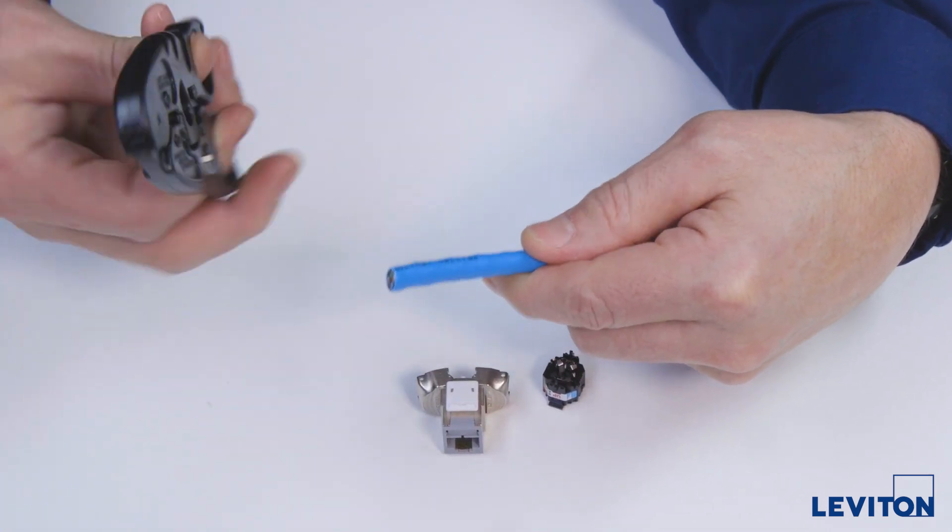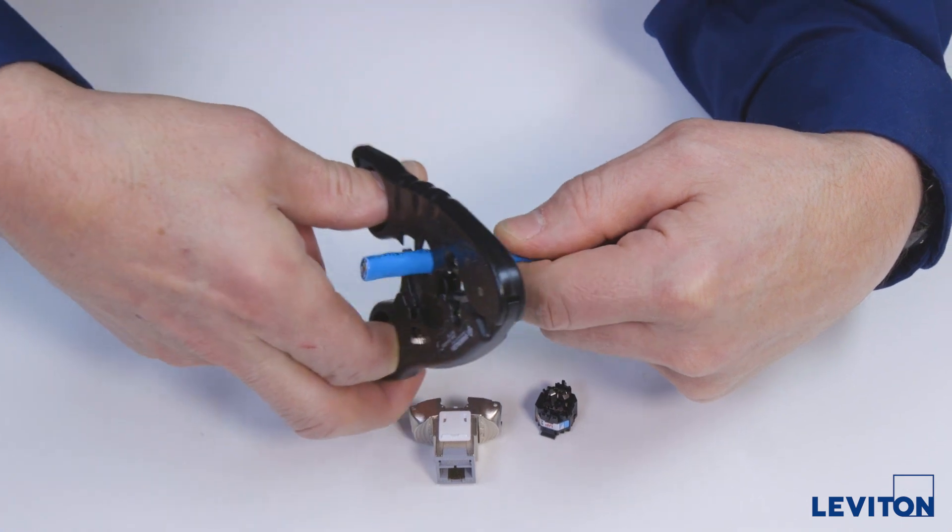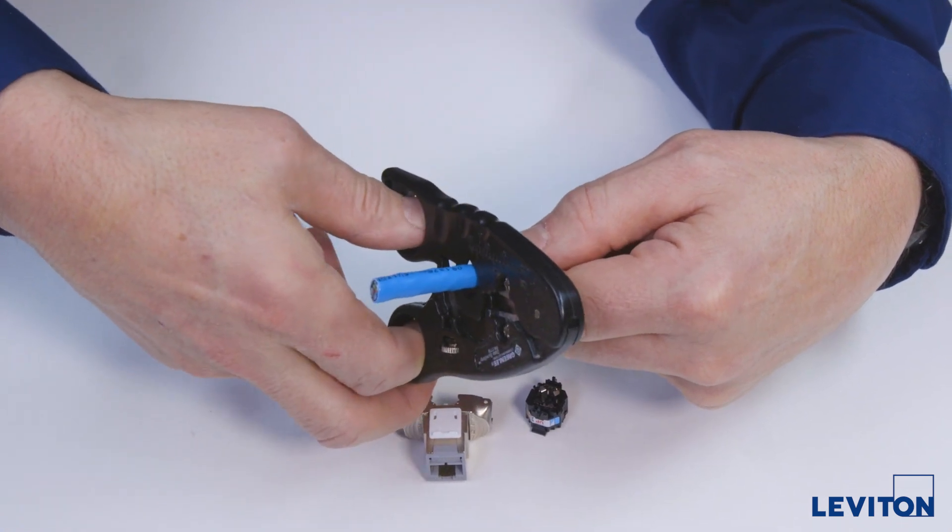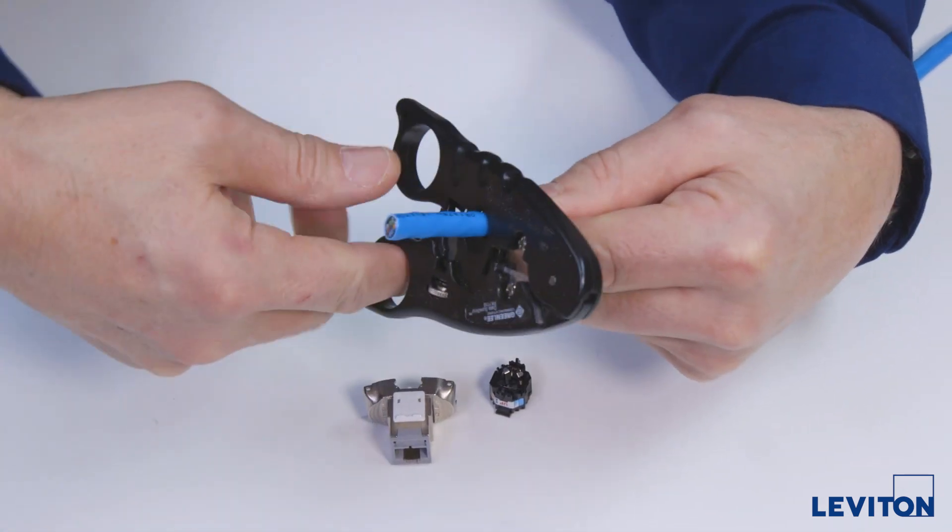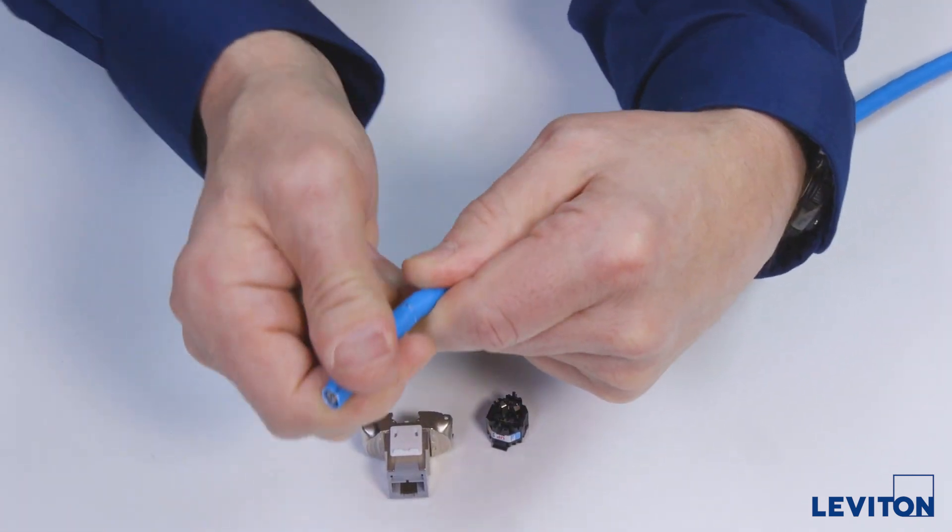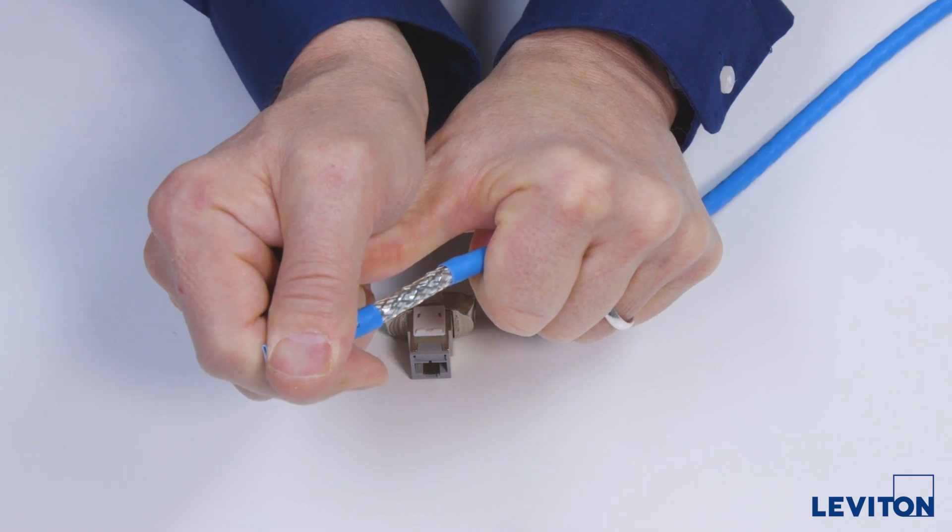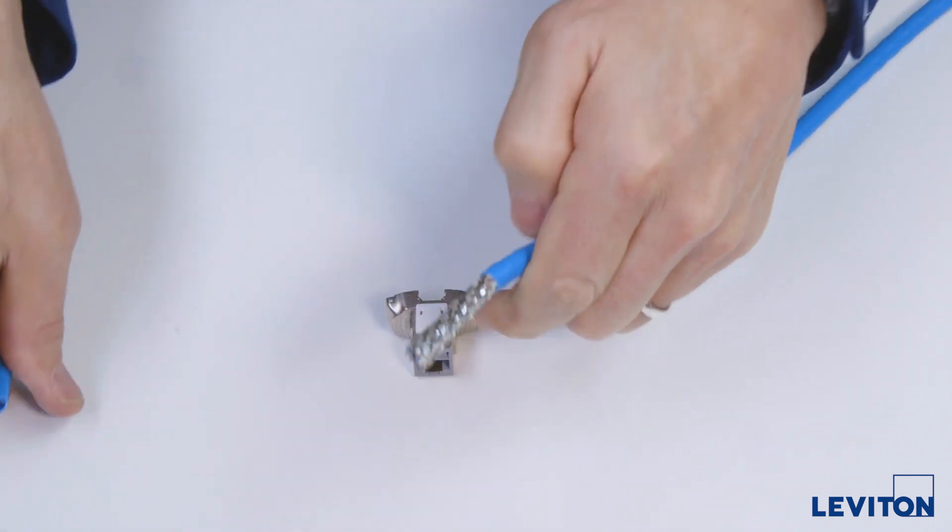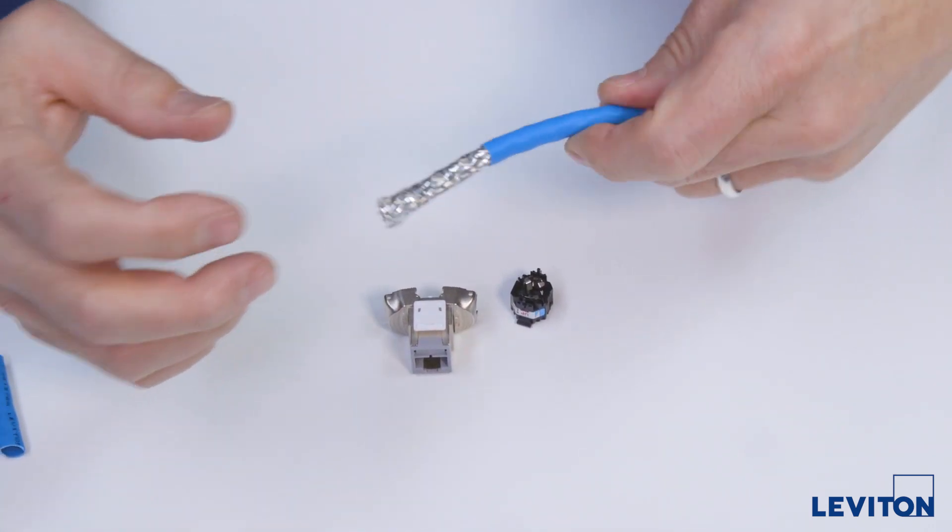Begin by using a data cable strip tool and set it about an inch and three quarters down the cable. Go once around and break and remove the cable jacket. Inspect the strip point to make sure the stripper is set at the right depth and has not cut into the foil or conductors.